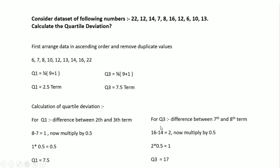For Q3, we use the 7.5th term, so we take the difference between the 7th and 8th terms. The 7th term is 16 and the 8th term is 14, so the difference is 2. Multiplying by 0.5 gives 1, and then Q3 is calculated as 16 + 1 = 17. So Q3 equals 17.